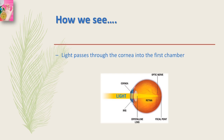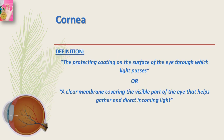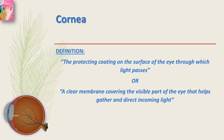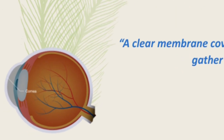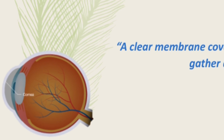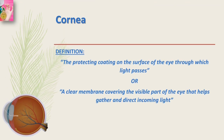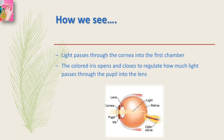Light passes through the clear cornea into the first chamber. Cornea has two definitions: first, it is the protective coating on the surface of the eye through which light passes; second, it is a clear membrane covering the visible part of the eye that helps gather and direct incoming light. The part labeled in the diagram here is the cornea, and zooming in on the picture you can see how the cornea actually looks.